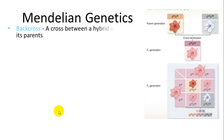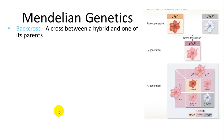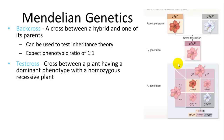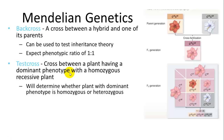A back cross involves crossing a hybrid back to one of its parents. Since the parents were homozygous, you can determine the type of inheritance based on the progeny ratios — you'd expect a 1 to 1 ratio, and if that's not right, something else is going on. A test cross involves crossing your plant with a homozygous recessive plant, which gives a specific ratio in the progeny depending on whether they are heterozygotes or homozygotes.